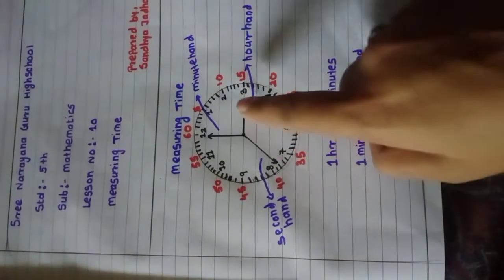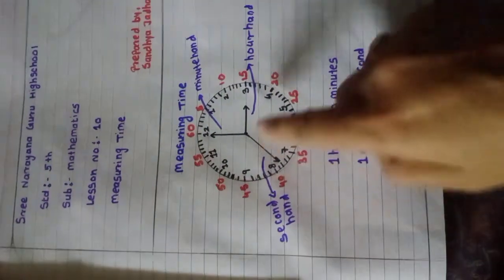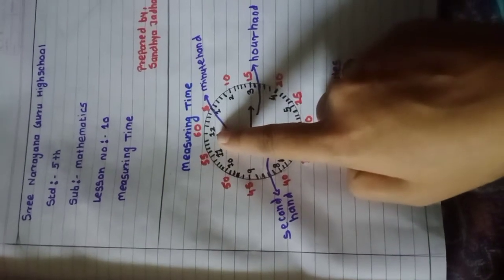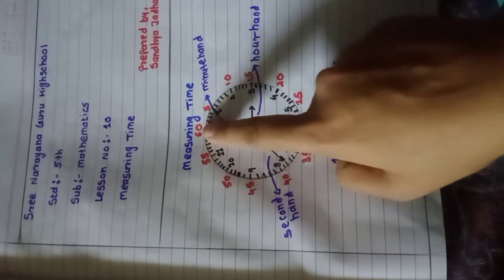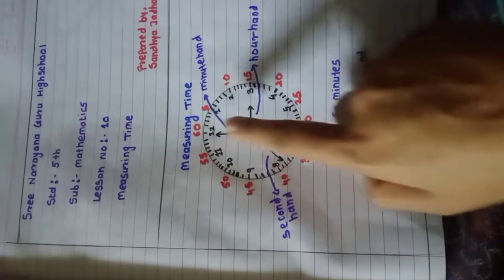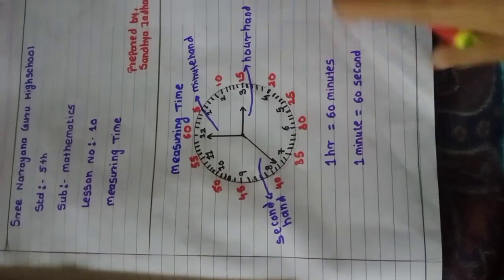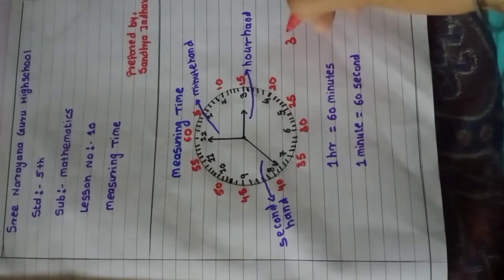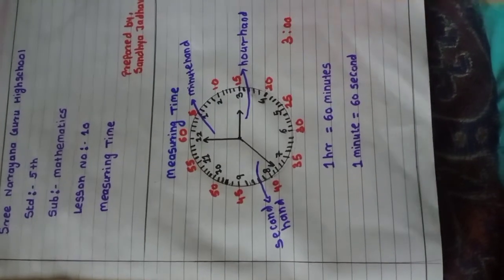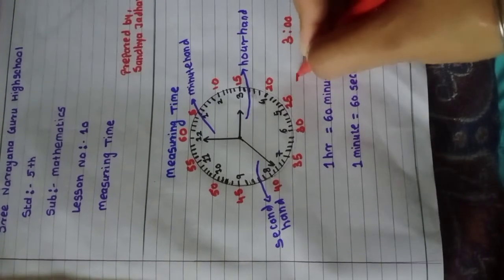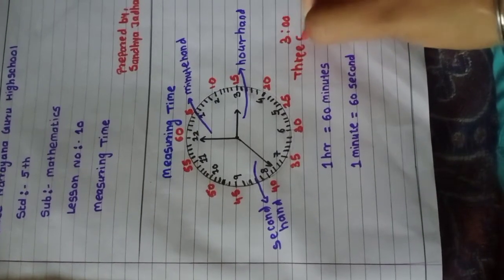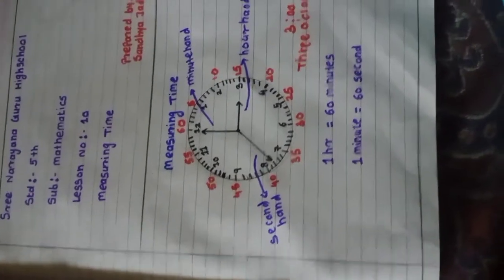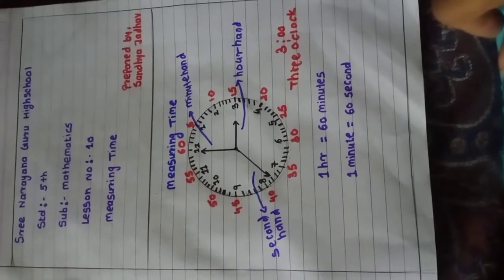Now you can see what is the time in this clock. The hour hand is on the 3, so it is 3 o'clock, because the minute hand reaches to the 12. 12 means 60 minutes, and 60 minutes means 1 hour. So the time is 3 o'clock. How can I write this? I will write the timing. It is 3 o'clock. In this way, we measure the timings.